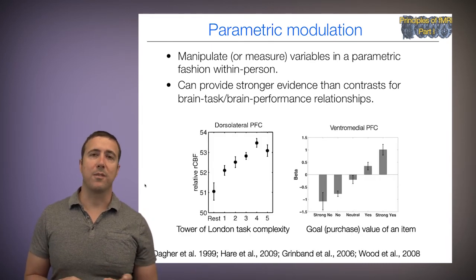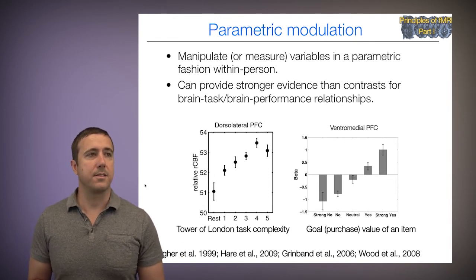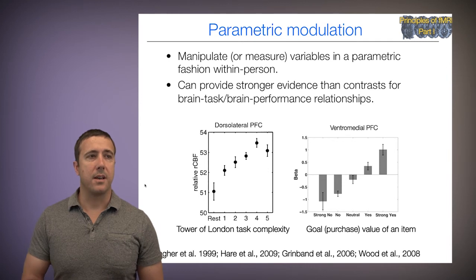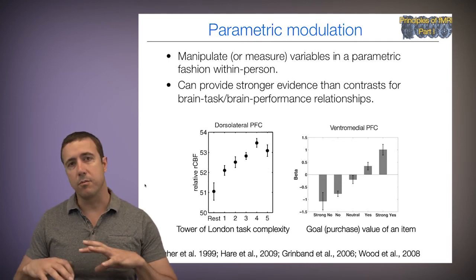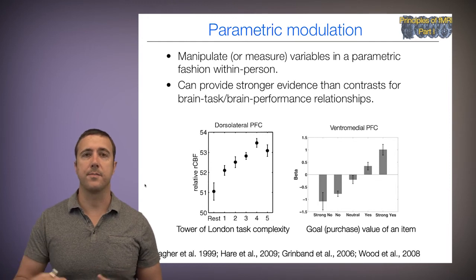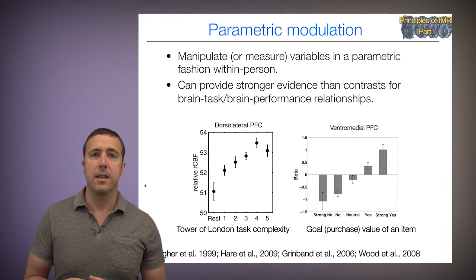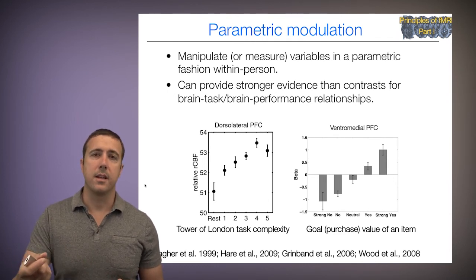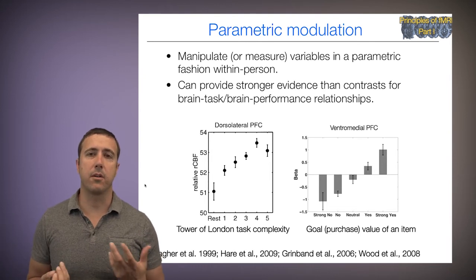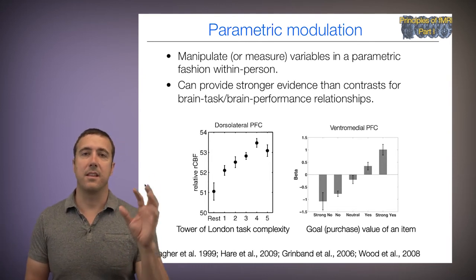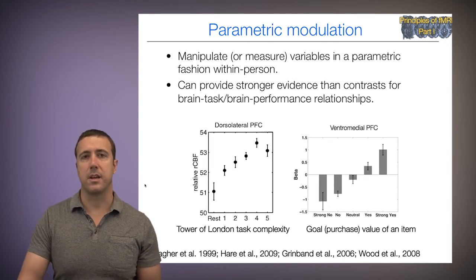Here are two favorite examples from early research. On the left, blood flow on the y-axis increases as complexity in a Tower of London task — which involves reasoning and executive function — increases, and we're looking at the dorsolateral prefrontal cortex. There's a graded parametric increase in blood flow as task complexity increases, boosting our confidence that DLPFC activity is related to task performance.